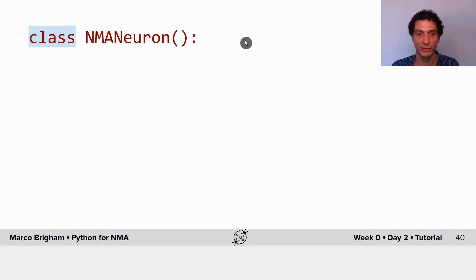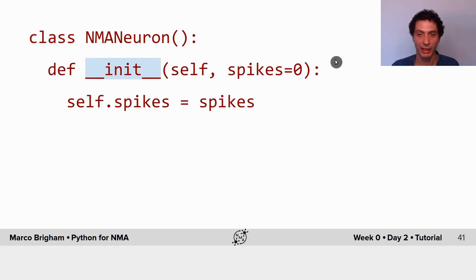This is how you define a class using the class command and the name of your class, followed by an initialization block with underscore underscore init underscore underscore.